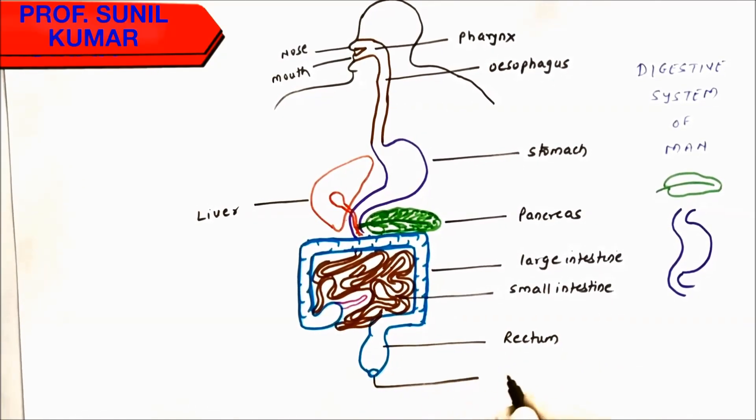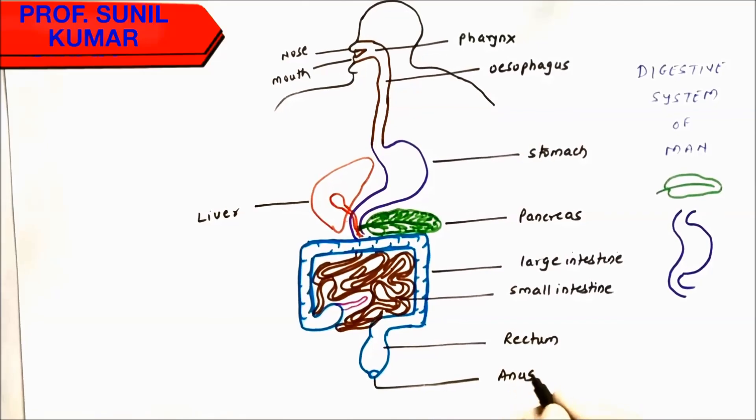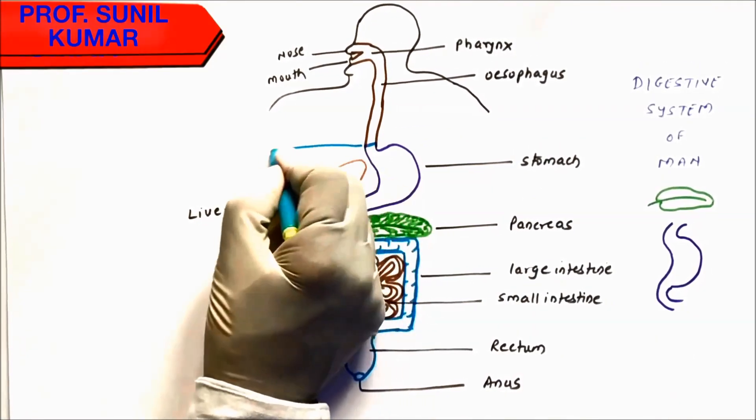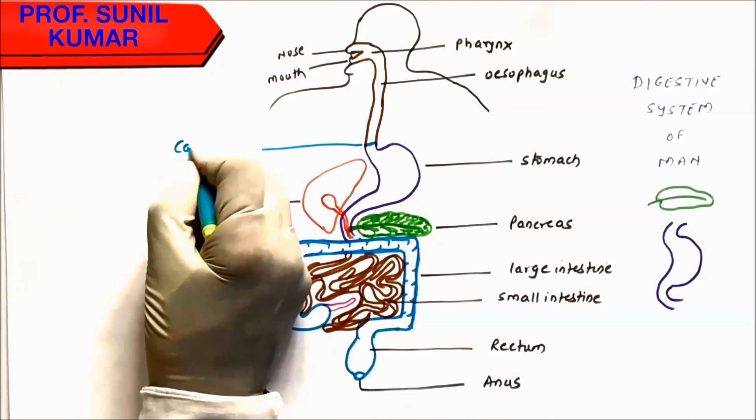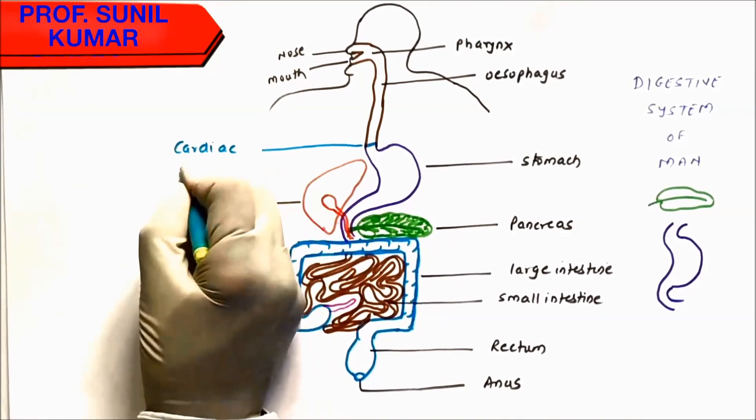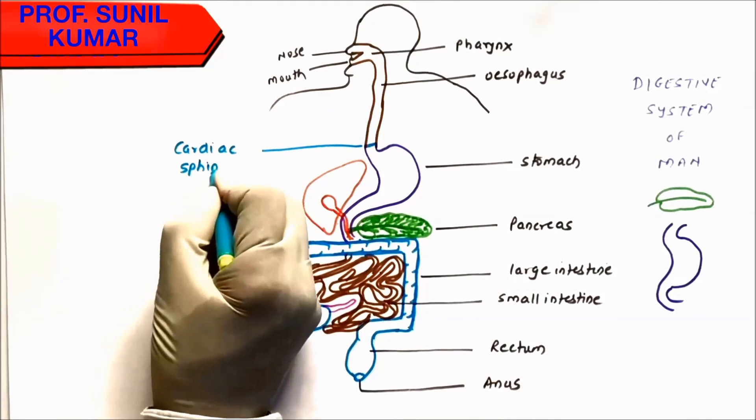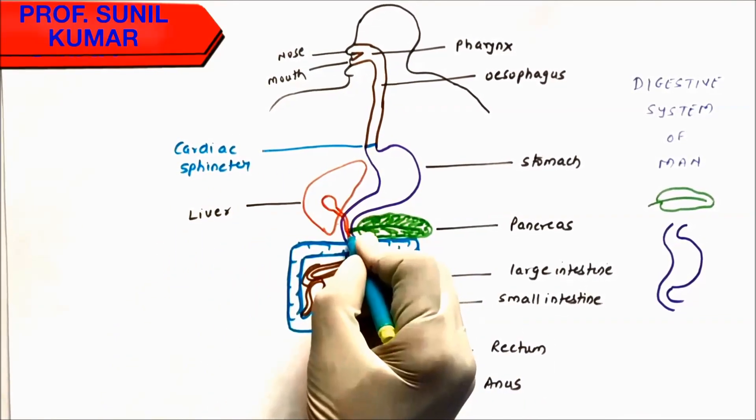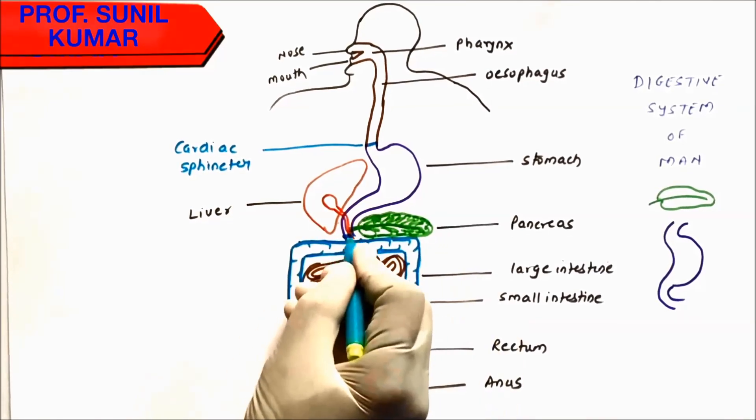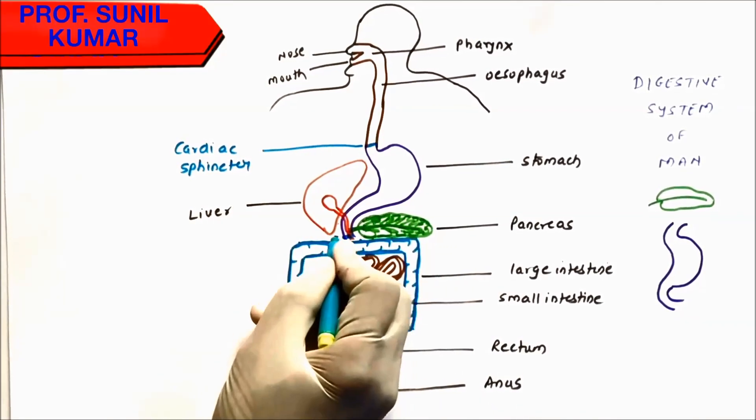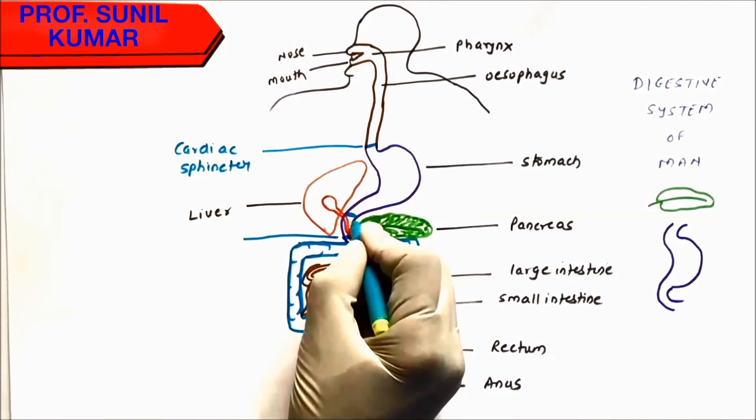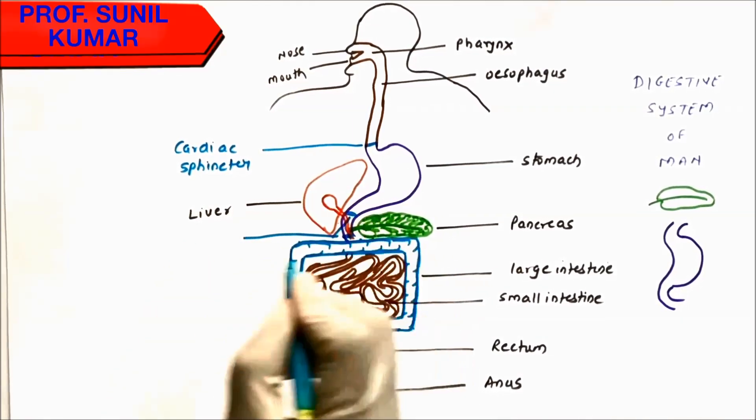Then we have the rectum, which is for collecting fecal matter, then the anus. The stomach has a sphincter called the cardiac sphincter, which is near the heart, therefore it is called cardiac sphincter, which prevents the regurgitation of food. Then we have one more sphincter at the end of the stomach that is called the pyloric sphincter. This pyloric sphincter prevents the movement of acidic food slowly into the small intestine.